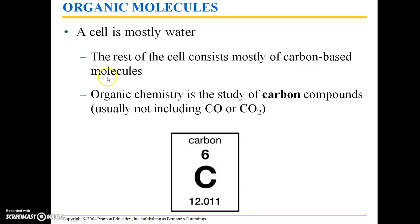Organic chemistry is the study of carbon compounds, and these usually do not include carbon monoxide or carbon dioxide. Here we have carbon from the periodic table. The element symbol is in the middle. We have the atomic number here, which is equal to the number of protons, and the mass number here, which is equal to the number of protons plus the number of neutrons.